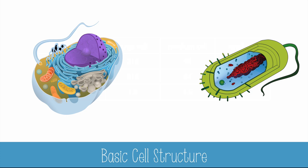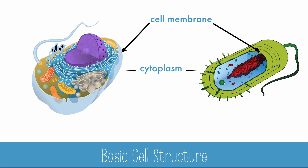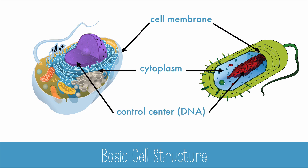Now all cells have some basic features in common. Here's an animal cell and a bacterial cell. They both have a cell membrane, cytoplasm with a jelly-like cytosol, and a control center, which consists of DNA.